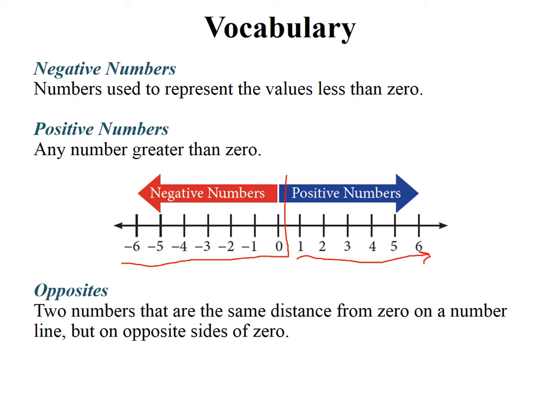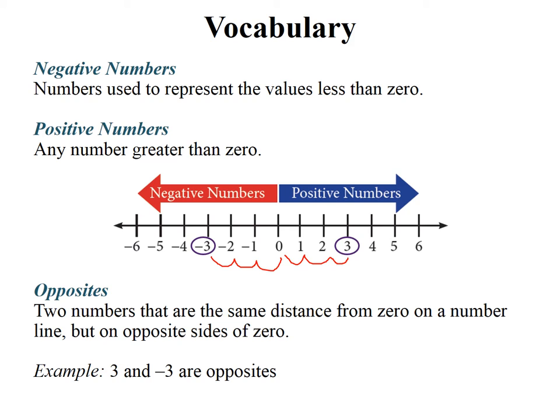The next one we're going to talk about is opposite. So these are two numbers that are the same distance from zero on a number line but on opposite sides of zero. The example we're going to use is three and negative three. They are opposites because they are the same distance away from zero but on opposite sides of zero. So if I counted over one, two, three, one, two, three. And you guys actually learn a lot about integers in that video.